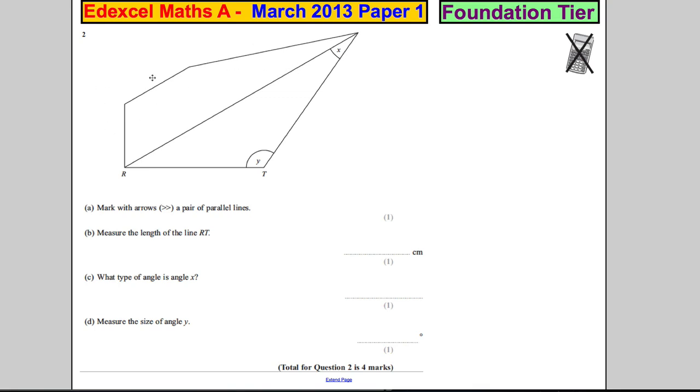Okay, question two here. We're given a shape but it looks like it's made up of a quadrilateral four-sided shape stuck onto a triangle, and for part A we're asked to mark with arrows a pair of parallel lines.